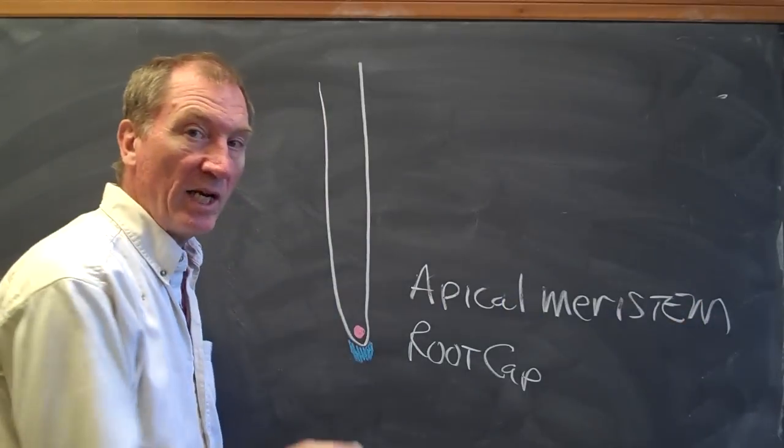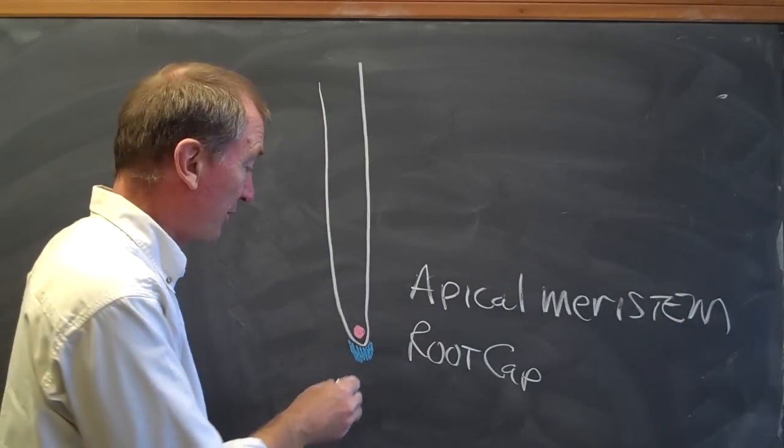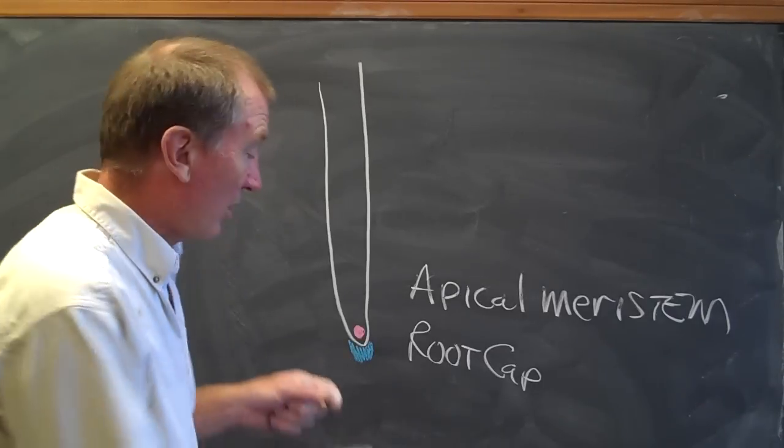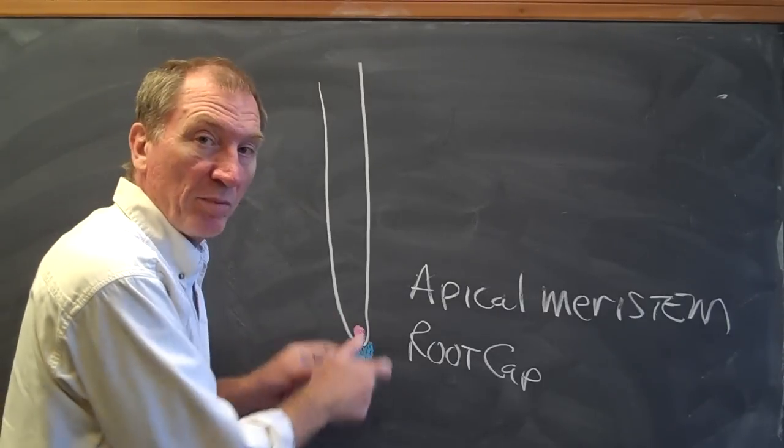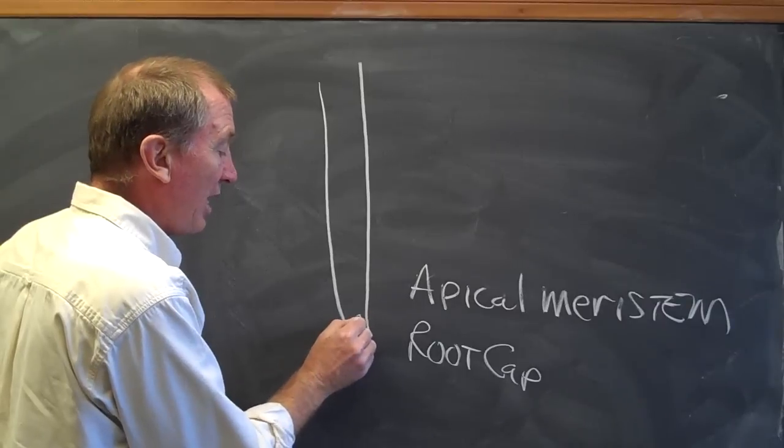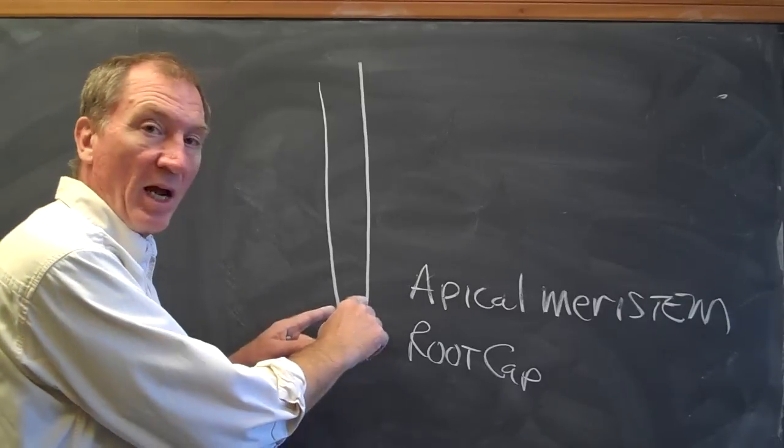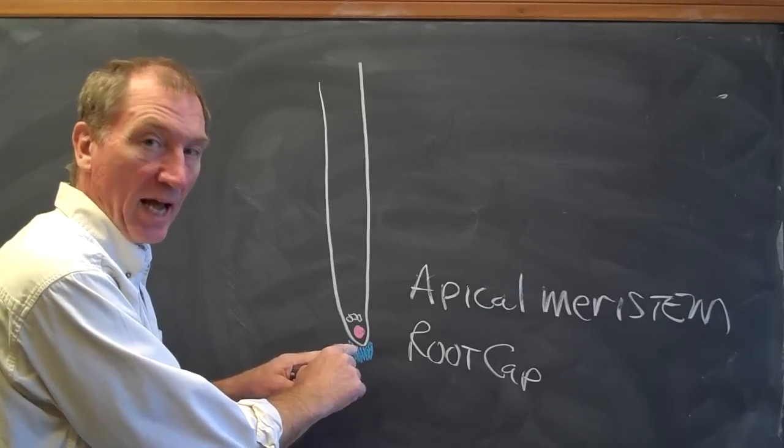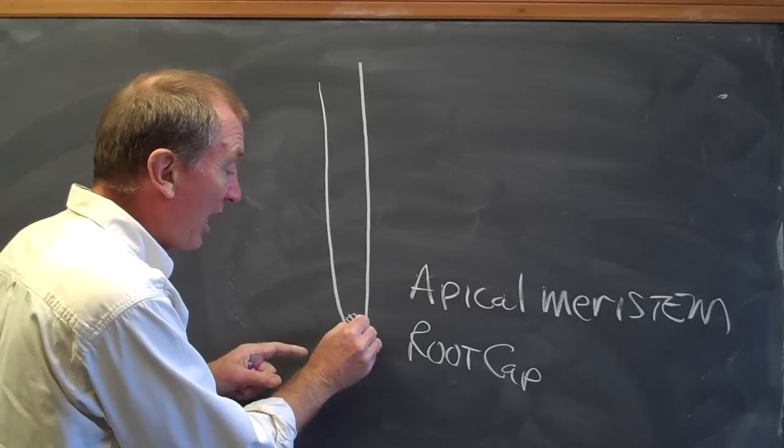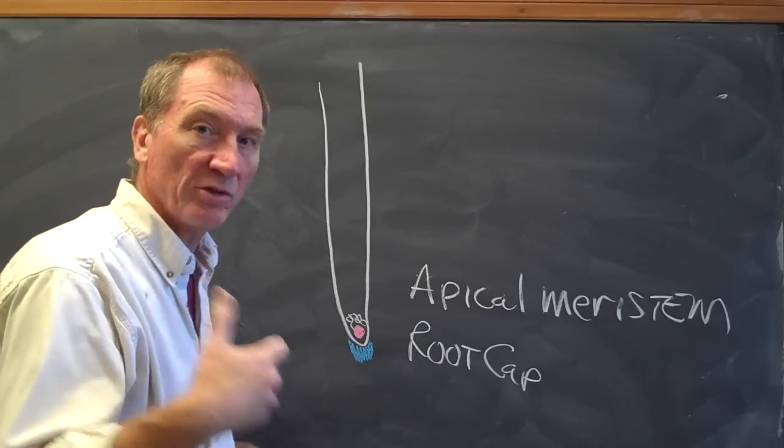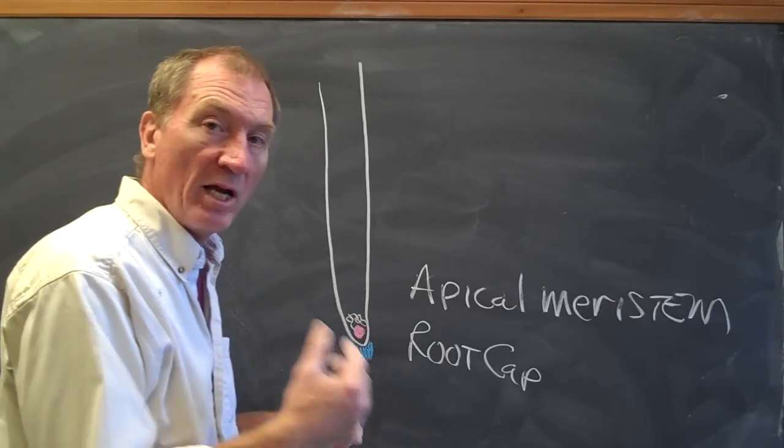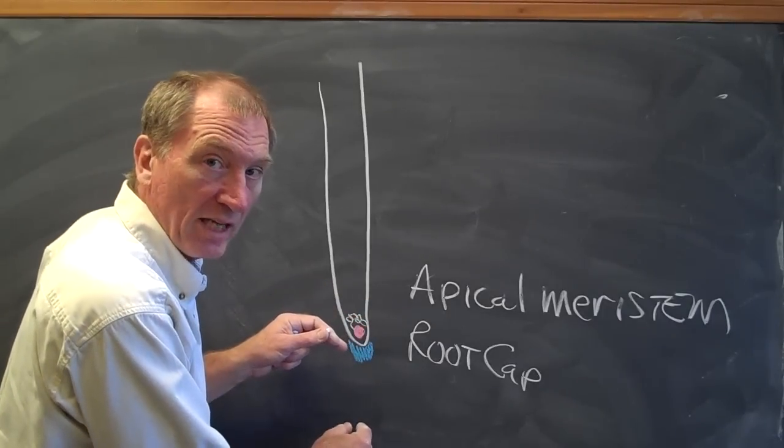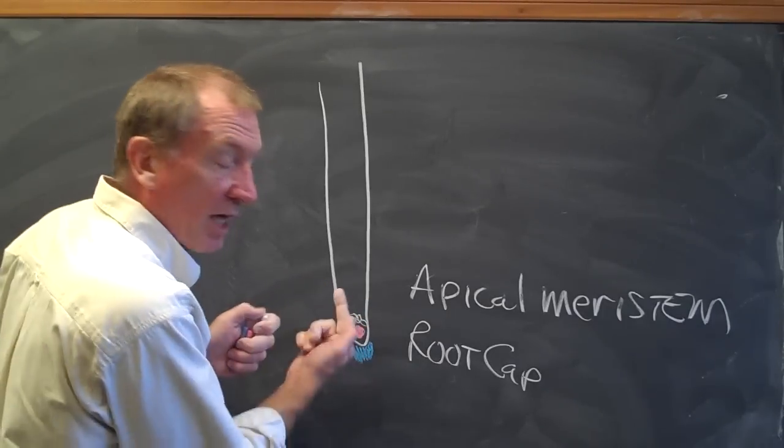So the root has an apical meristem and it's producing new cells. Now, the root grows by new cells being placed behind the apical meristem and that pushes the tip of the root down. And as it continues to add new cells behind it, it continues to push the root down. So the apical meristem is responsible for elongation of the root. The meristem always stays at the tip and is adding new cells behind it.